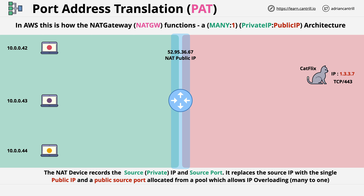At this point, let's say that the top, or red, laptop generates a packet going to CatFlix. So its destination IP address is 1.3.3.7 and its destination port is 443. The source IP of this packet is itself — the laptop's private IP address — and the source port is 32768, which is a randomly assigned ephemeral port.